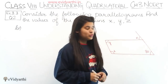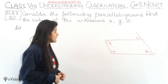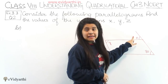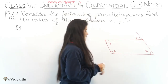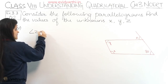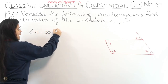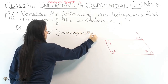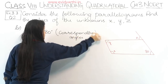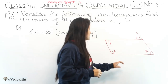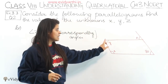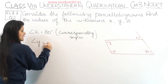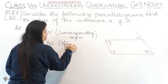Now coming to the fourth part. We have to find x, y, and z. First, this angle equals angle z because they are corresponding angles. So z = 80°. Next, the 80° angle and angle y are opposite angles, so y = 80°. Reason: opposite angles.